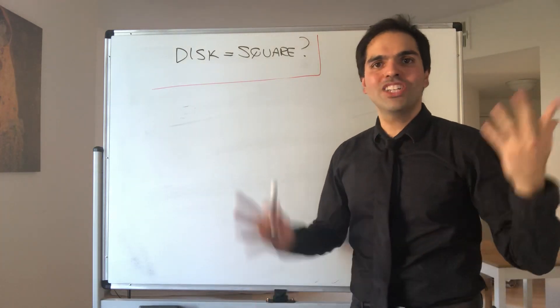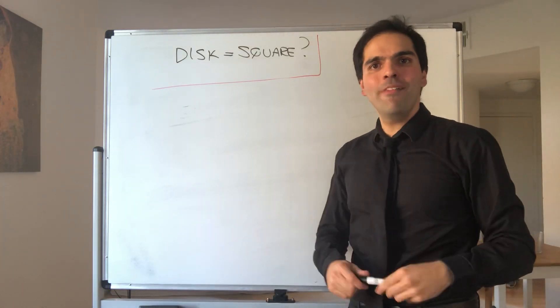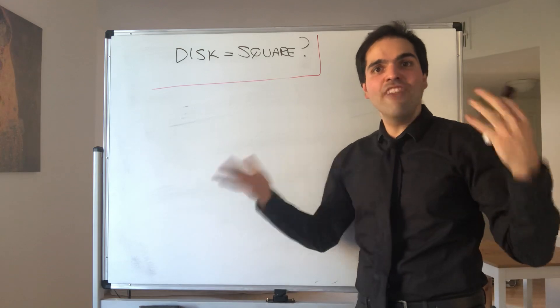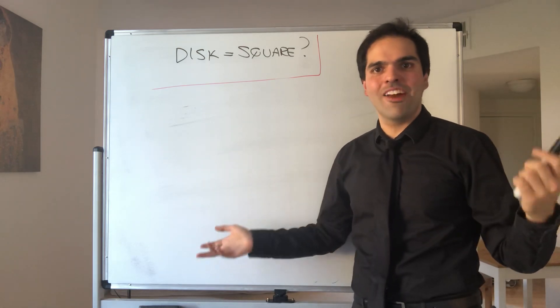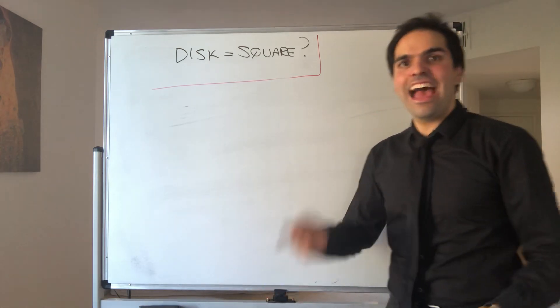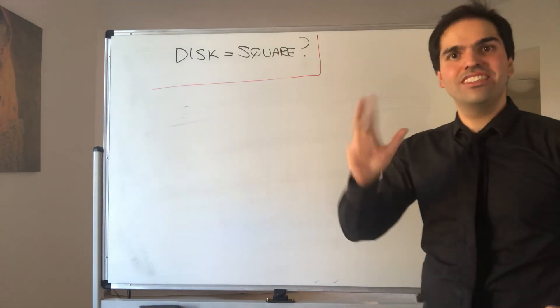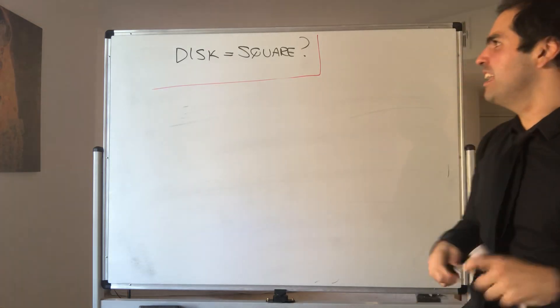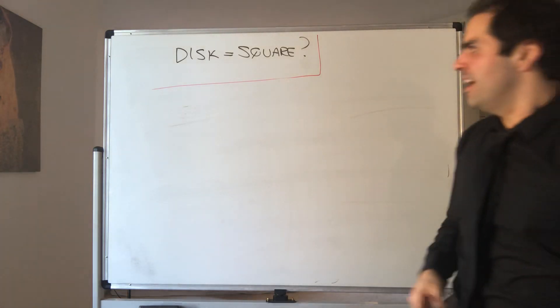All right, thanks for watching. You're probably wondering: can a disk ever be a square? And indeed it can, if you consider a different metric in R2.